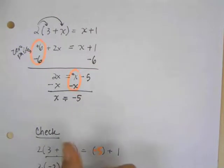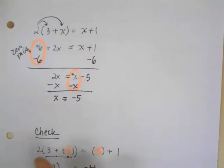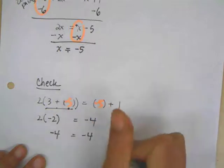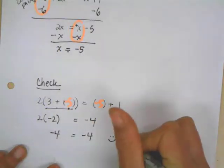So 2, and I can do what's inside the parentheses. 2 plus negative 5 is negative 2, equals negative 5 plus 1 is negative 4. Negative 4 equals negative 4.